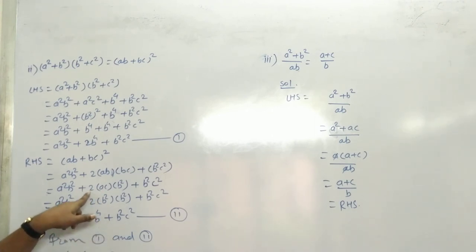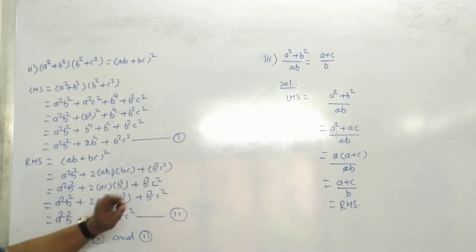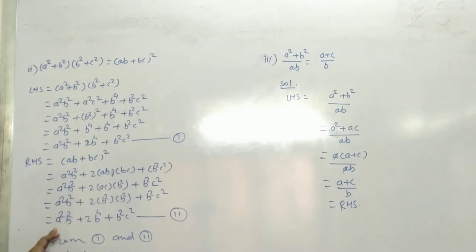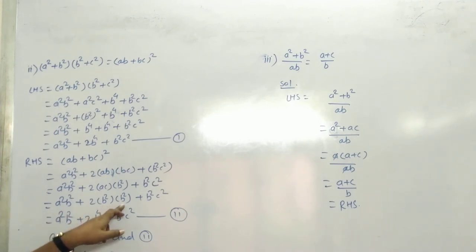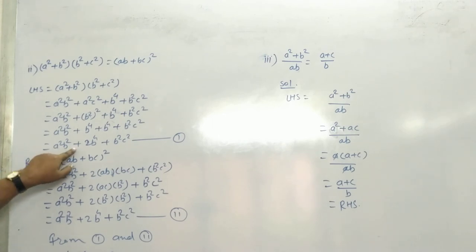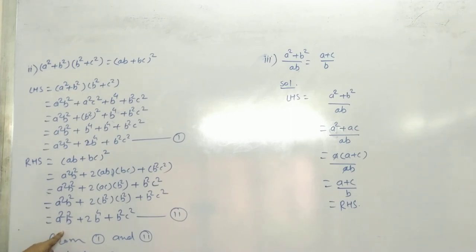अब 2 times AB into BC = 2 times AC into B square। AC अलग क्यों लिया? क्योंकि AC is equal to B square। So 2 times B square into B square = 2 times B raise to 4। तो RHS: A square B square plus 2 times B raise to 4 plus B square C square। और 1 में क्या है? A square B square plus 2 times B raise to 4 plus B square C square — and that's why from 1 and 2, LHS is equal to RHS।